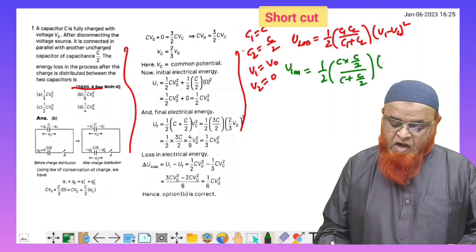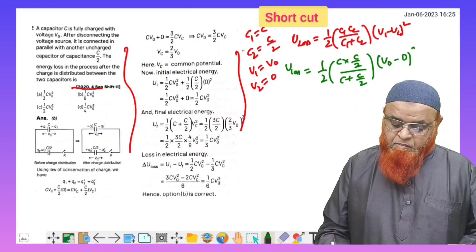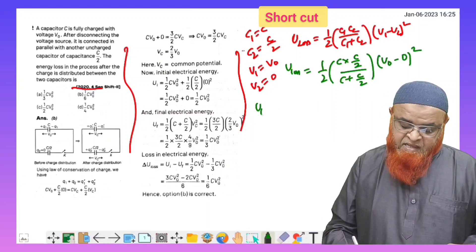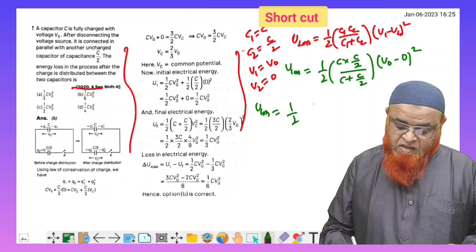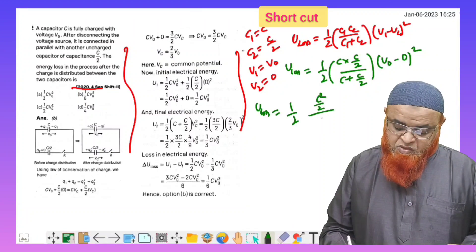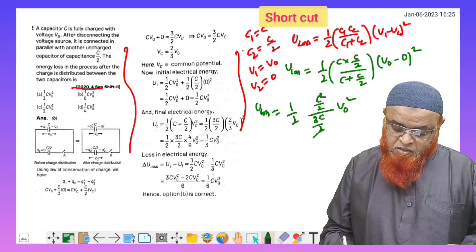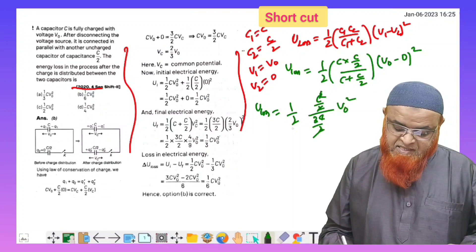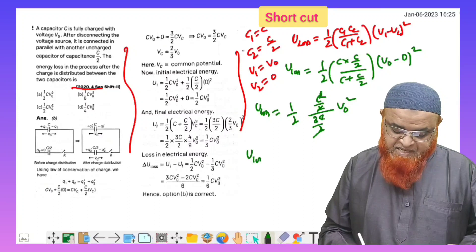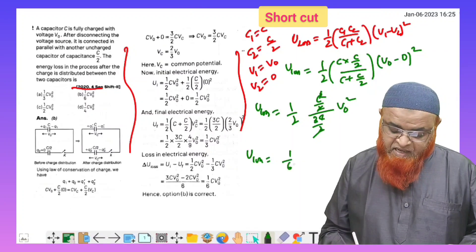Therefore, energy loss is taken as half, this is C squared by 2, and this is 3C by 2, into V0 whole square. So 2 and 2 gets cancelled, C and C gets cancelled, and 2 times 3 is 6. Therefore, energy loss is taken as 1 by 6 C V0 square.